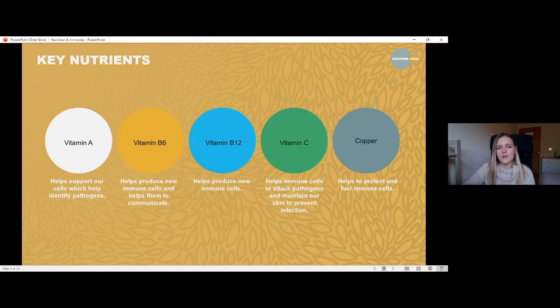So next thing, I thought it would be really helpful if we go through some of the key nutrients involved with supporting the immune system. This might look a little bit overwhelming. And don't worry, these aren't on here because I'm expecting you to remember them. But I thought we could just go through some of the main ones and then we can have a look at what foods they're in. So first one we have is vitamin A. This helps to support our cells, the cells which identify the pathogen. Vitamin B6 helps to produce new immune cells and also helps them to communicate with each other. Vitamin B12 helps to produce new immune cells. Vitamin C also helps the cells to attack the pathogens and also to maintain our skin, which is really important to prevent infection. And then we've got copper who generally helps to protect and also to fuel the immune cells as well.